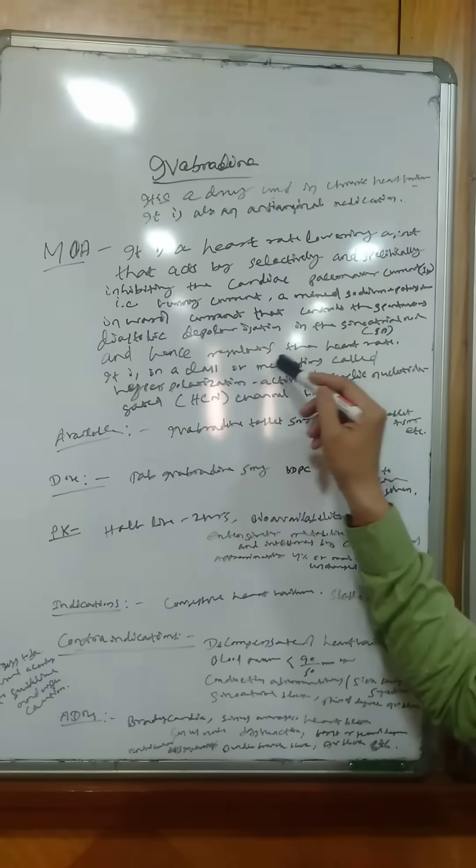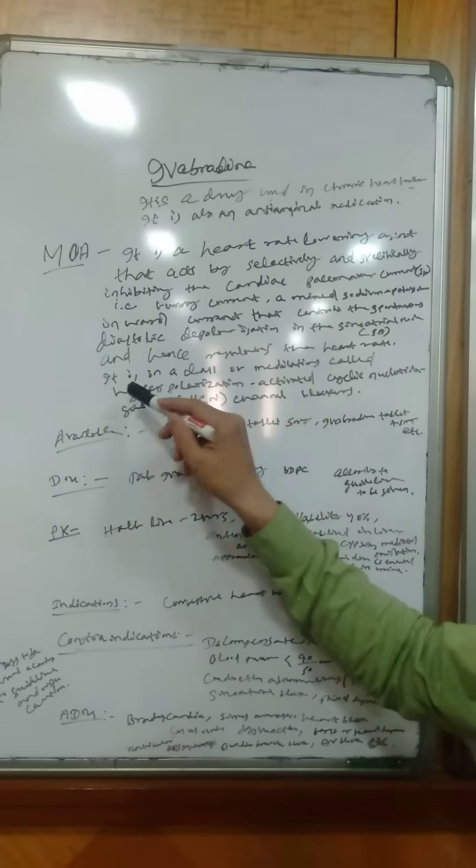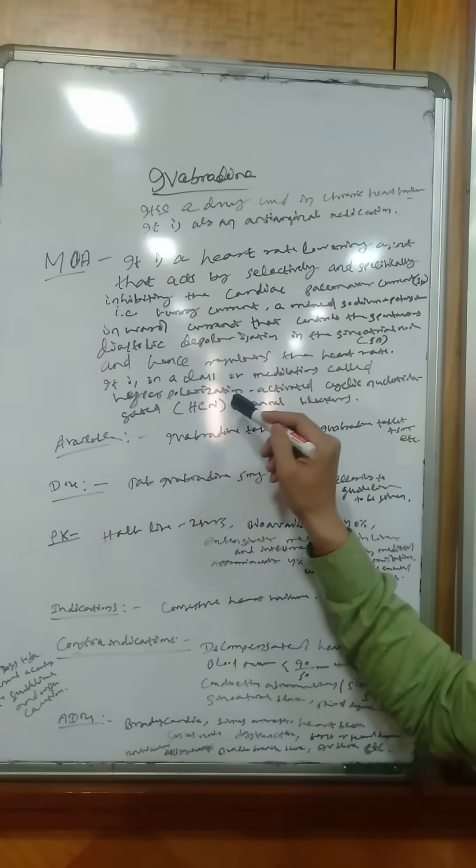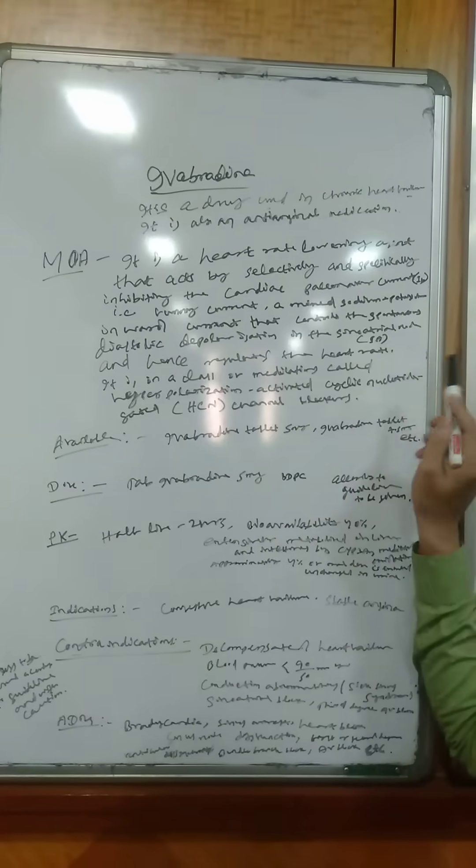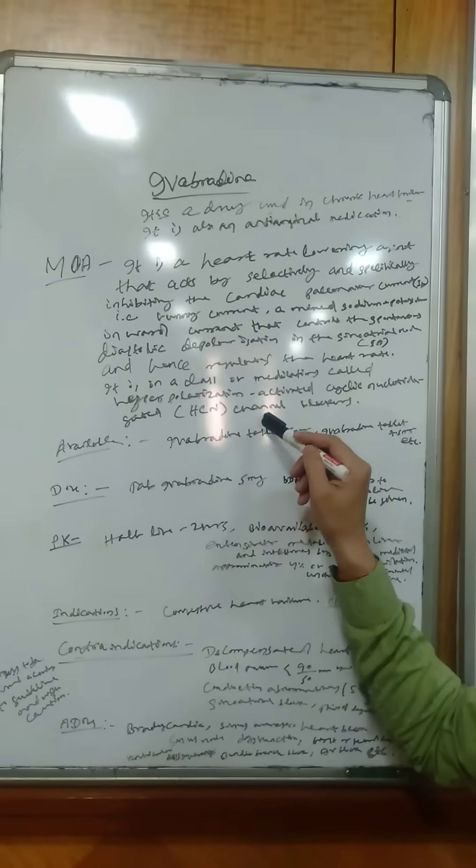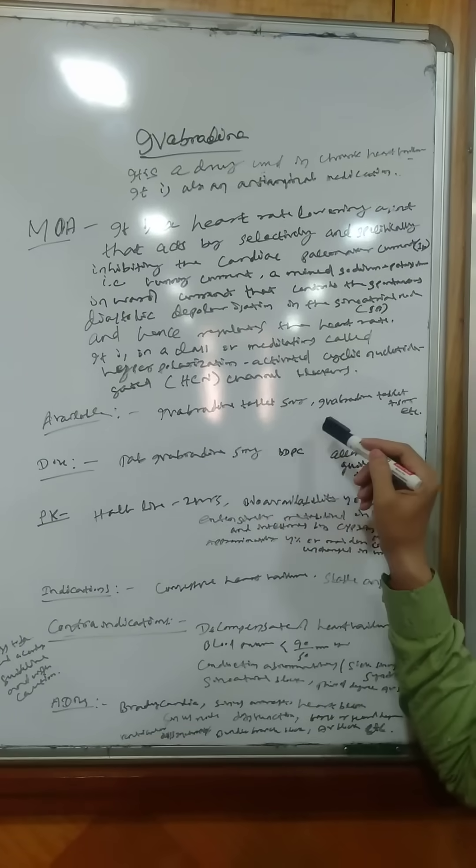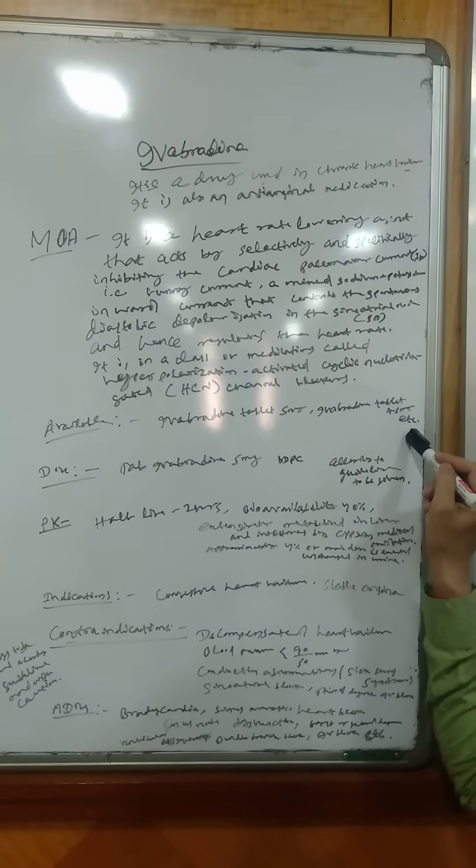It regulates the heart rate and it is in a class of medications called hyperpolarization activated cyclic nucleotide gated HCN channel blockers. It is available as Ivabradine tablet 5mg, Ivabradine tablet 7.5mg, etc.